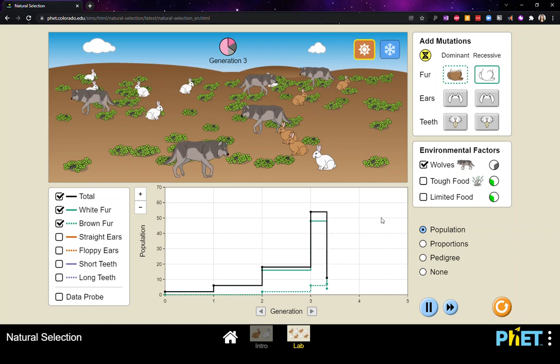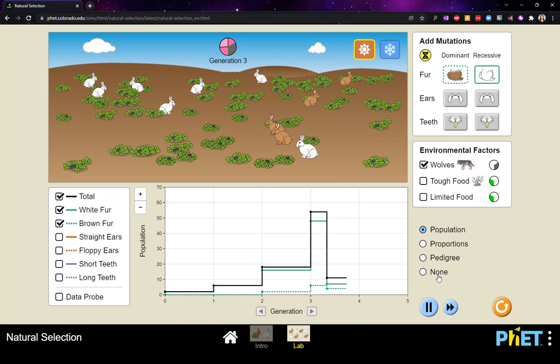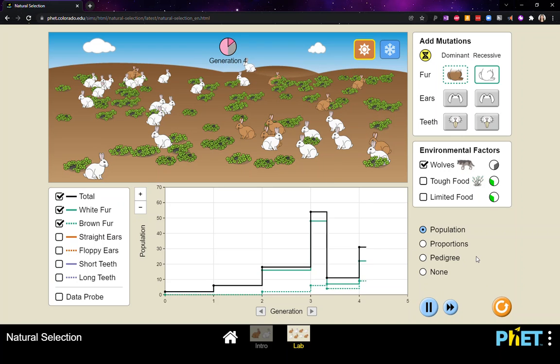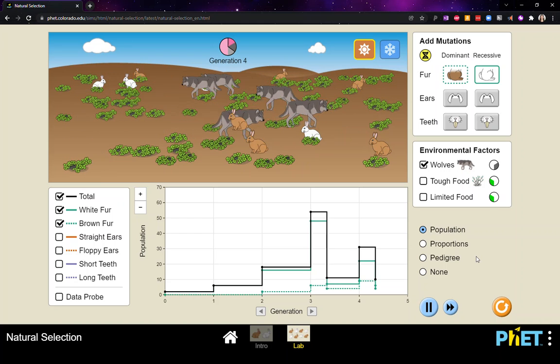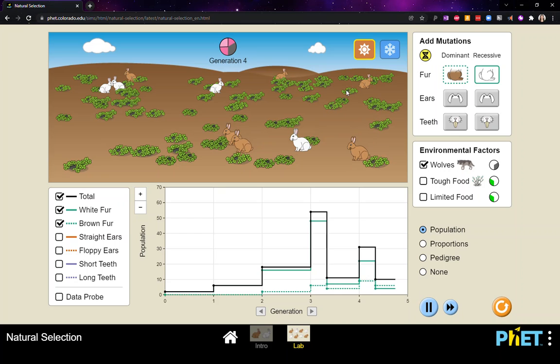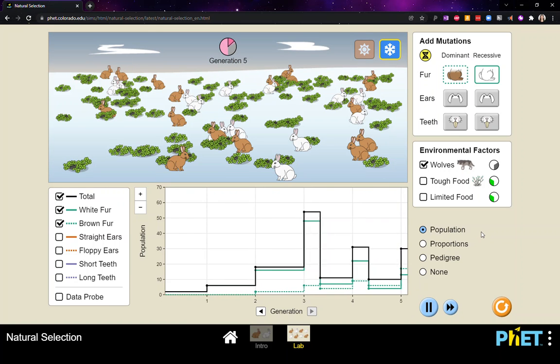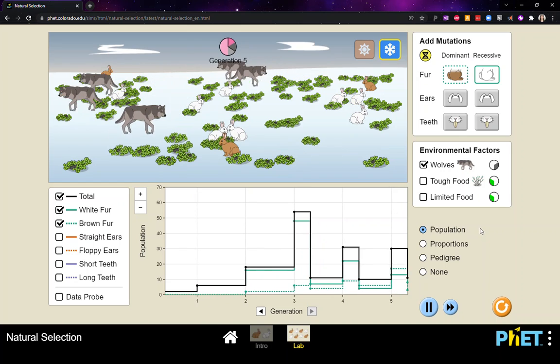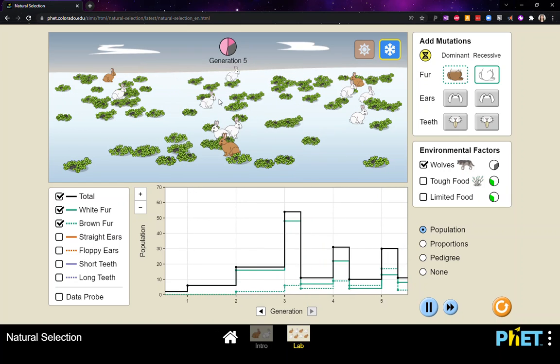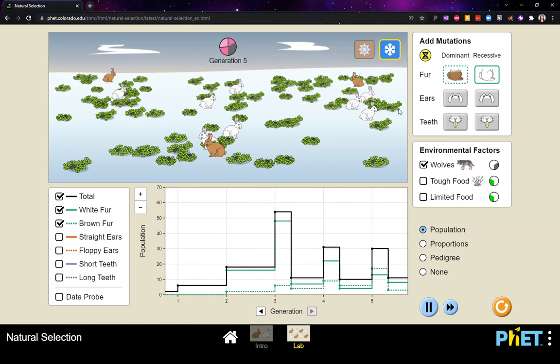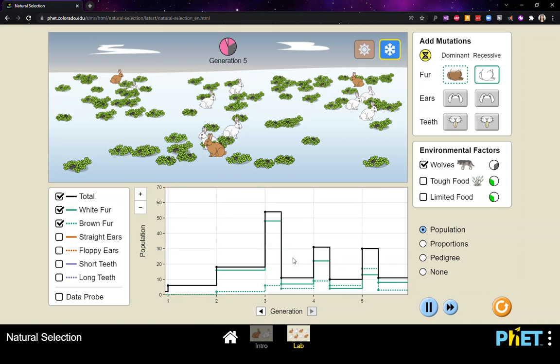So now there's going to be some wolves and we're going to see what the wolves do. There they go. They're going to eat a bunch of rabbits. Let's see what's left. We've got some brown and white. Let's go through another generation and see what happens. More white rabbits. So who's surviving here? The brown rabbits are surviving, right? But what if we change this? What if we went and made it snowy outside? Then what would happen? Then we've got more white rabbits that are remaining.